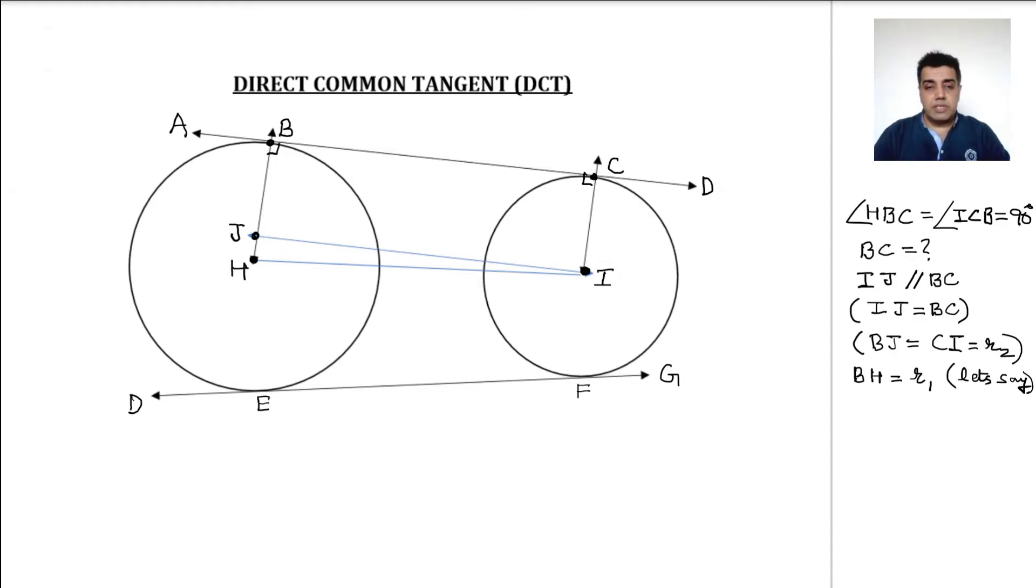Once you have said this, now we can use some pictorial jargons. These are equal, which we have already mentioned. So now in this case, what is HI? HI is the distance between the two centers. So can I say that angle BJI is equal to angle CIJ? Of course, I can say this and they are equal to 90 degrees.